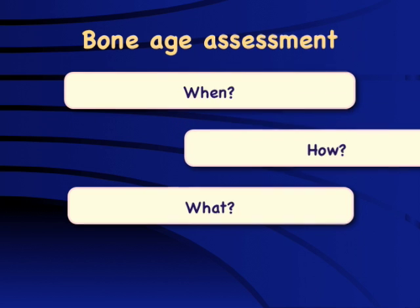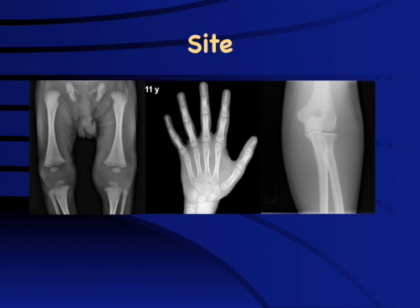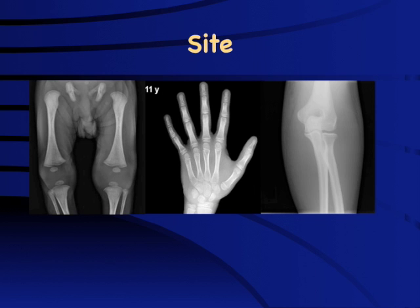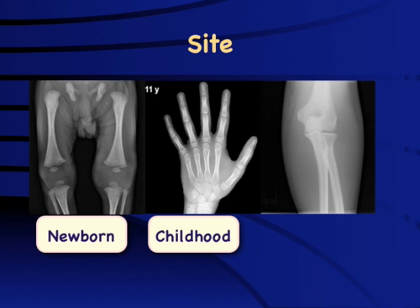How do we assess bone age? We are trying to compare the maturation of bones against a population reference, so selecting an appropriate site is extremely important. The knee is used only for newborns and is reserved for congenital hypothyroid children to assess intrauterine effects of hypothyroidism — absence of epiphysis at the lower end of femur or upper end of tibia indicates significant intrauterine thyroid deficiency. For most clinical practice, it is the non-dominant wrist and hand — commonly the left — which is most important.